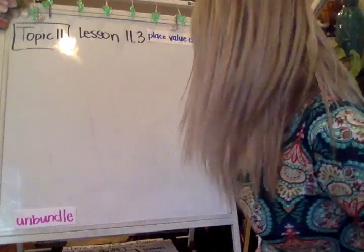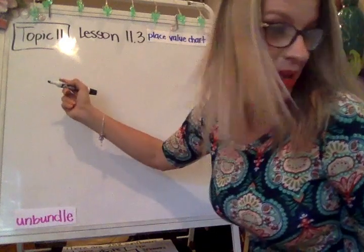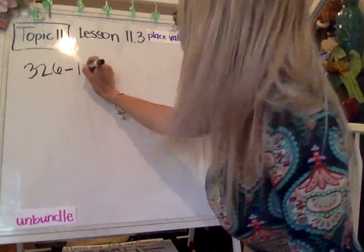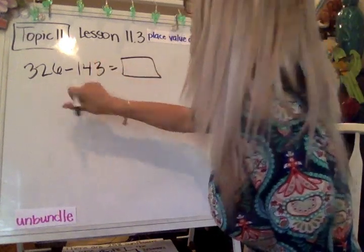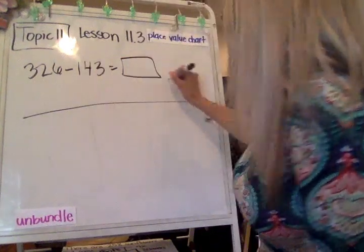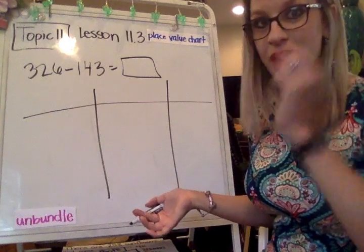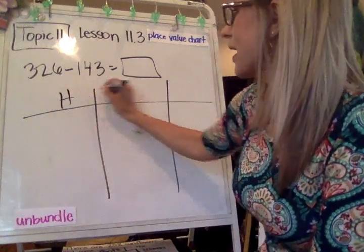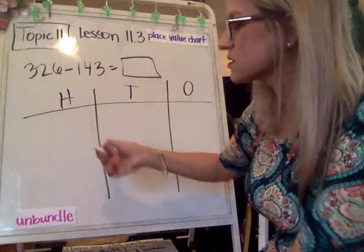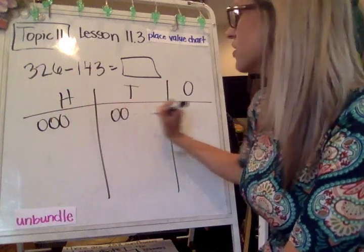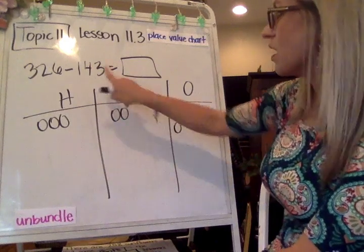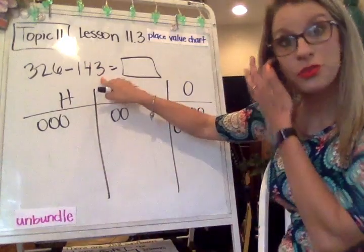All right, we've got another one. 326 minus 143. So here is our place value chart. We've gotten that written on our paper already, so that's pretty lucky for you. Our hundreds, our tens, and our ones place. We're starting with the 328. So there's 326. 1, 2, 3, 4, 5, and 6.